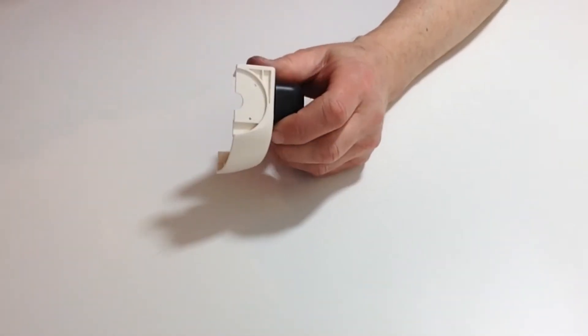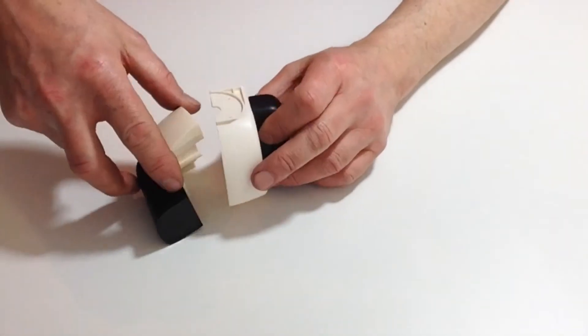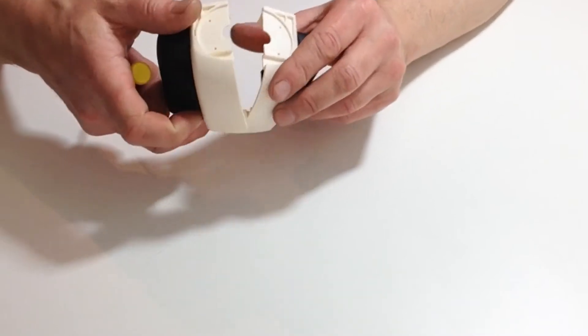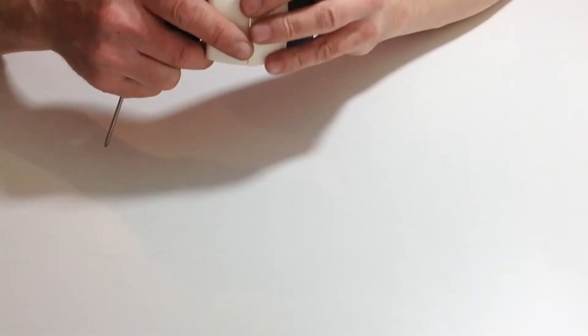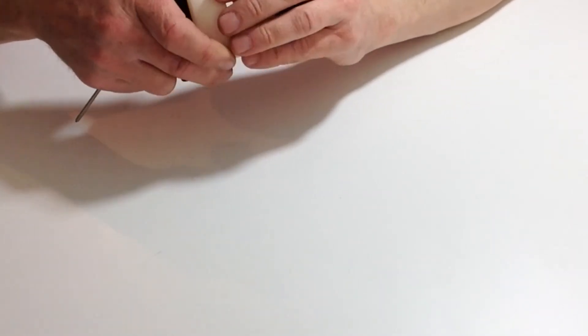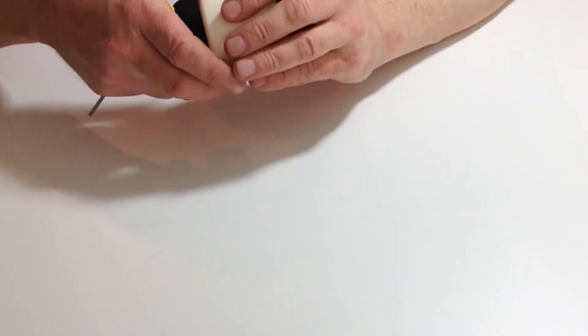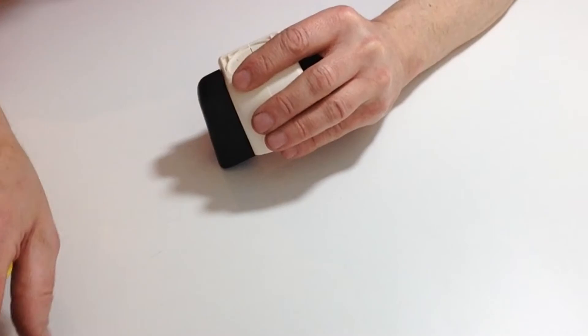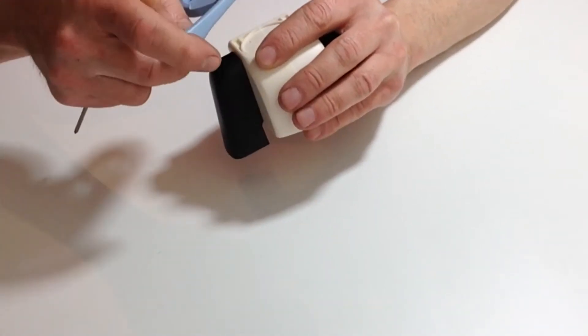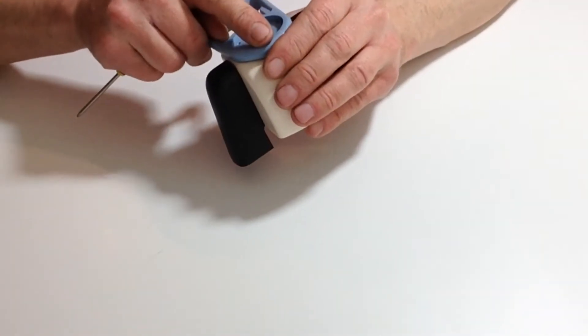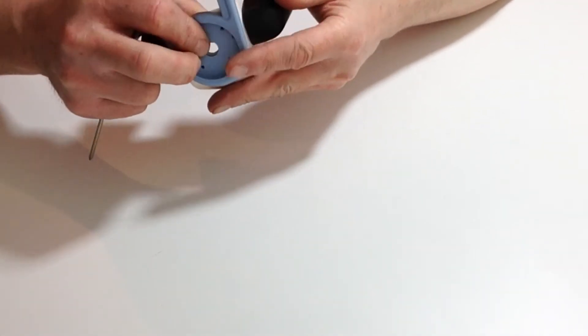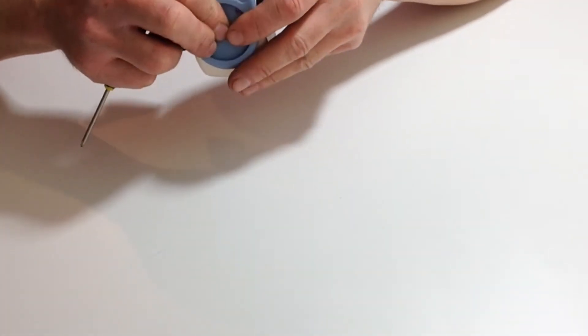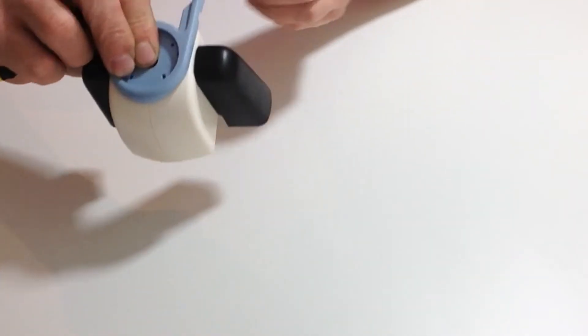Once you've done that, take the other half that we got and just double check the two halves together. Then I'm going to take the next end and place that on there.